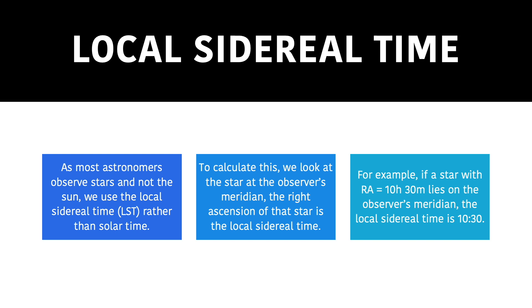For example, if a star with a right ascension of 10 hours 30 minutes lies on the observer's meridian, the local sidereal time must be 10 hours 30 minutes.